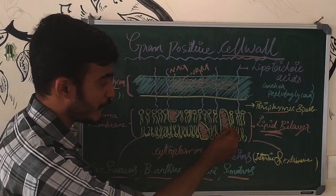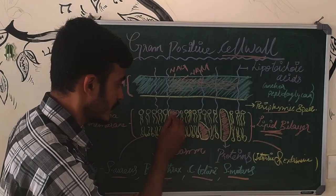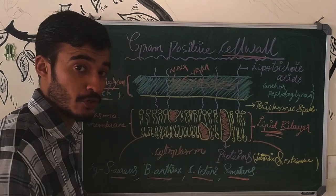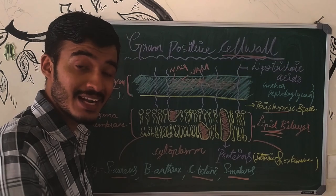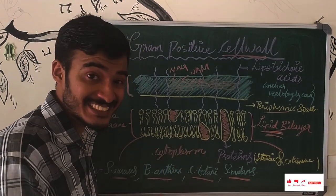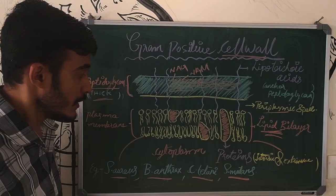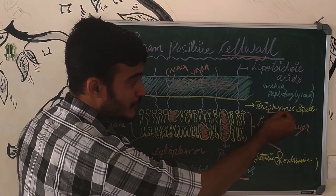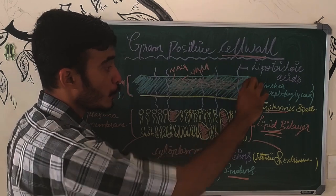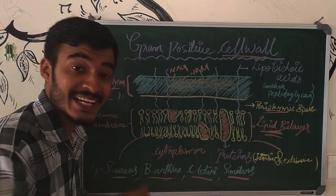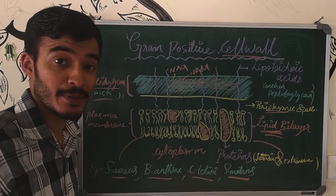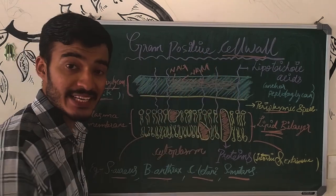We call it the proteins — the extrinsic proteins and intrinsic proteins — and their functions. We call it the periplasmic space. And we call it the thick peptidoglycan layer in gram-positive cells.